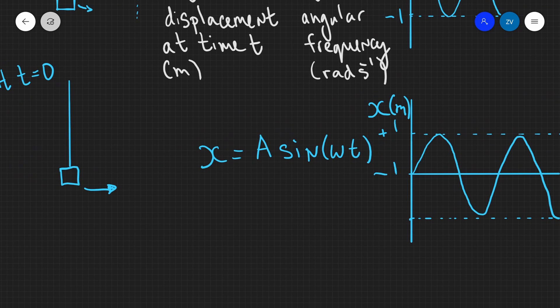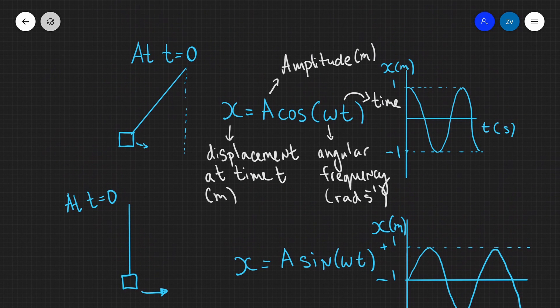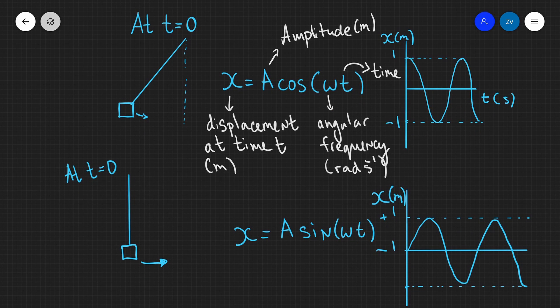So just to summarize: if our motion starts at maximum displacement, i.e. the amplitude, then we're going to use the cosine equation. If at the start we're starting from the equilibrium point, we're going to use the sine equation.